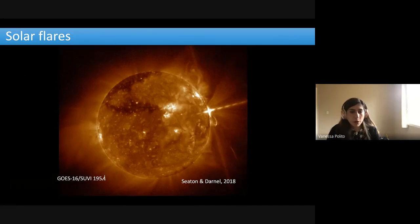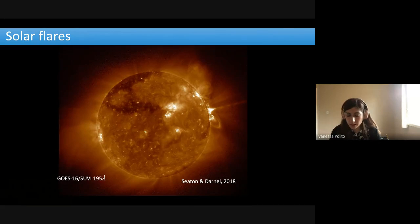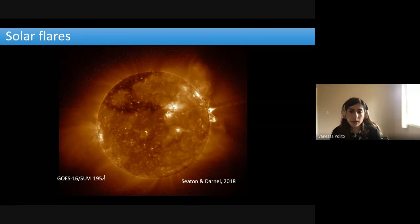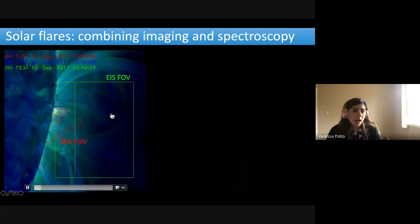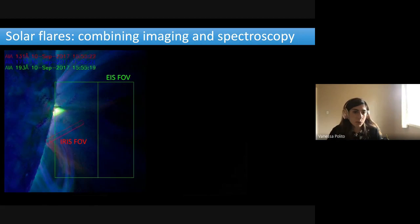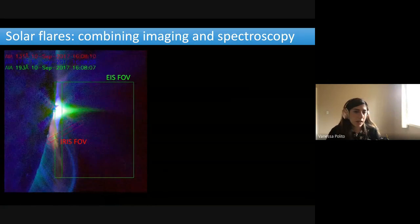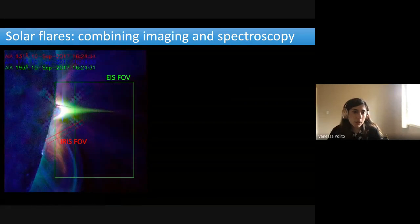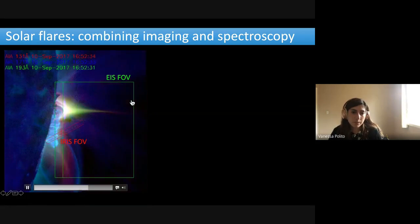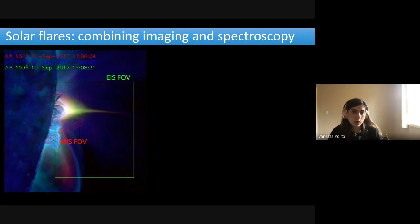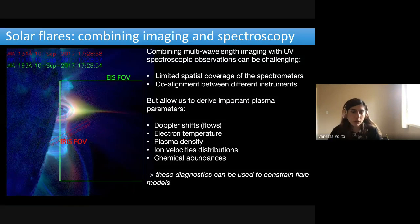Even though there's been a lot of progress in understanding flares in recent years, there are still many things we don't understand, and many details of the energy release and transport are not clear. This is another movie zooming in on the same flare — a composite of three AIA filters showing plasma at very high temperatures around 10–20 million degrees, but also cooler temperatures. You can also see the scanning slits from EIS and IRIS showing the field of view of these two UV spectrometers. Most of my work has been focused on combining multi-wavelength imaging and UV spectroscopic observations of flares.